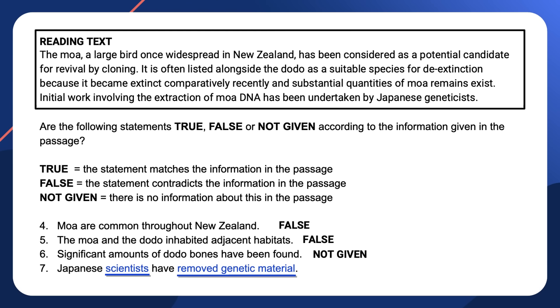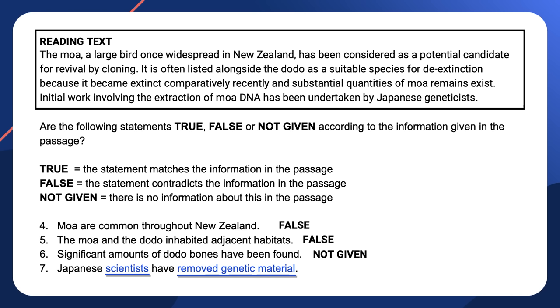Remember, the answers to these questions can always be found in order. Question seven states that Japanese scientists have removed genetic material. The word 'Japanese' stands out because, as a nationality, it has a capital letter — names of places, people, and dates tend to stand out as helpful signposts. In the passage, 'geneticists' are scientists, 'extraction' means the same as 'removed,' and 'genetic material' is a synonym of 'DNA.' In this case, the matching synonyms are used to express matching information — the two statements agree, so the answer is true.